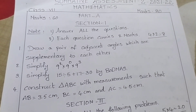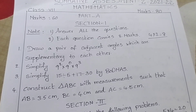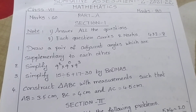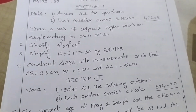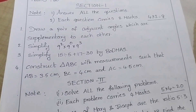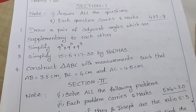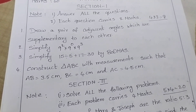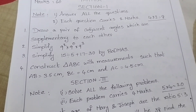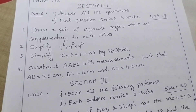Section 1, Part A. Answer all the questions. Each question carries two marks. First, draw a pair of adjacent angles which are supplementary to each other. Simplify.